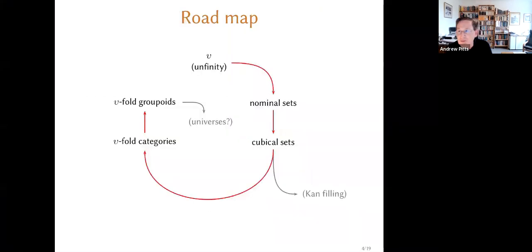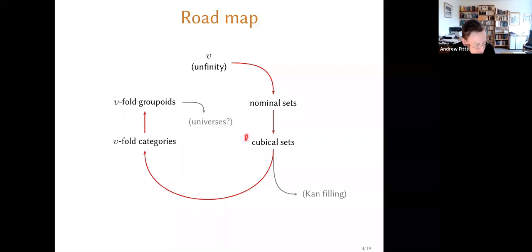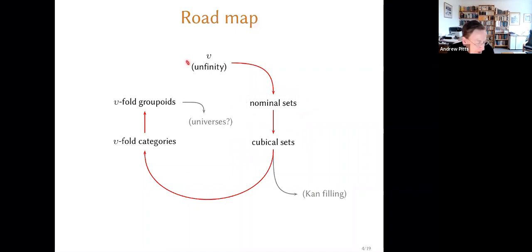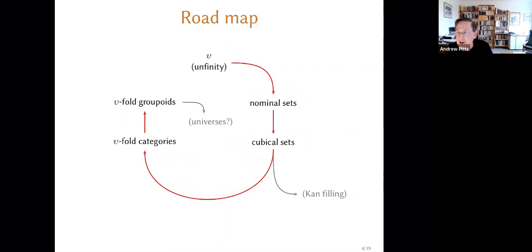Here's a map of what we're going to do. I'm going to explain to you the nominal view of cubical sets. I have to tell you a little bit about what nominal sets are, and I'll start by making a few remarks about infinity. Then we'll go off down a certain branch — not the usual one — but towards thinking about high dimensional categories in that setting.